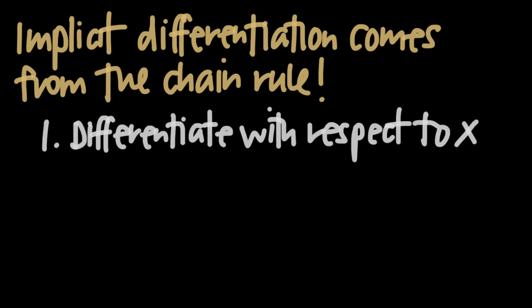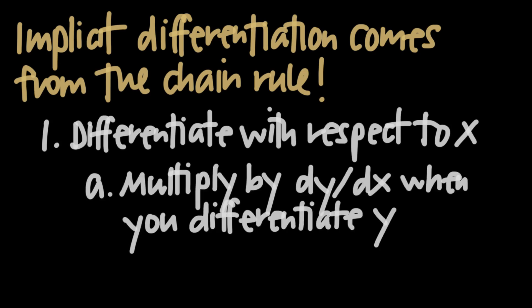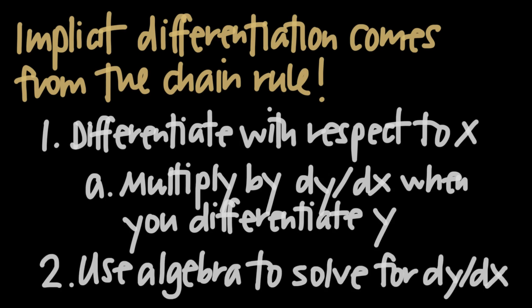First, we differentiate both sides of the equation with respect to the independent variable. Whenever we get to a term that contains the dependent variable, we recognize it as a function of the independent variable, and make sure to multiply it by the derivative with respect to x. And finally, we use algebra to solve for the derivative. It's as simple as that.